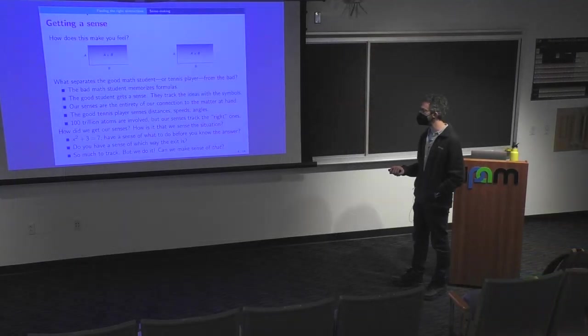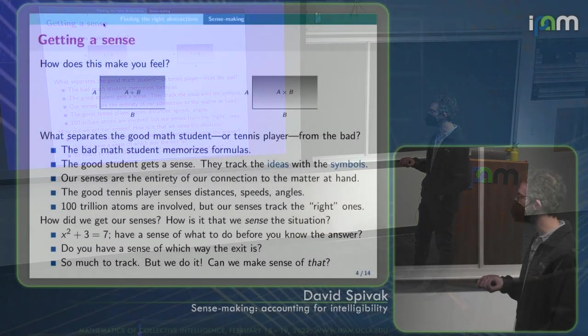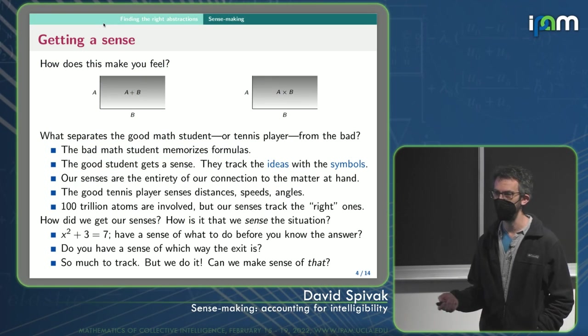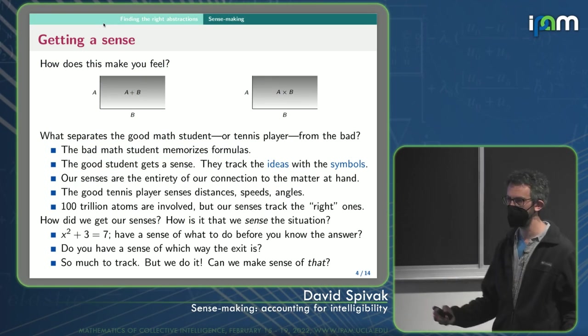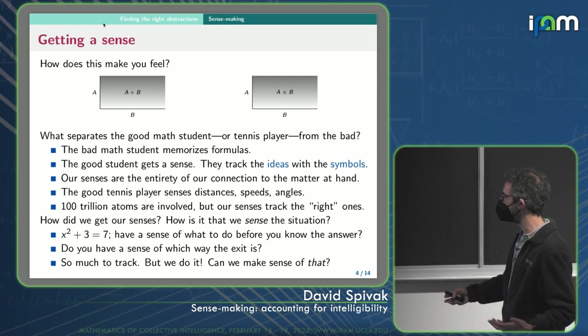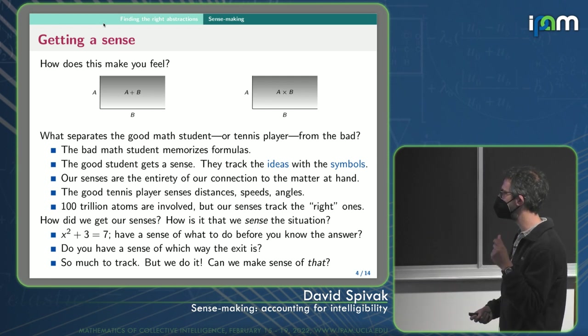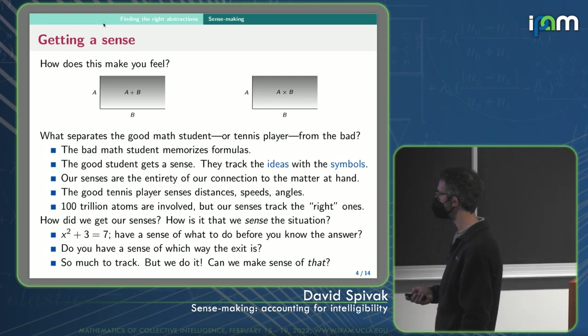So with x squared plus 3 equals 7, you might have a sense of what to do before you know the answer. You might look at it like, yeah, I'm going to be able to do that. Or you might right now have a sense of which way the exit is without having to, that's kind of available. Because I can instantly ask you which way the exit is and it's going to take you less than two seconds to figure it out.